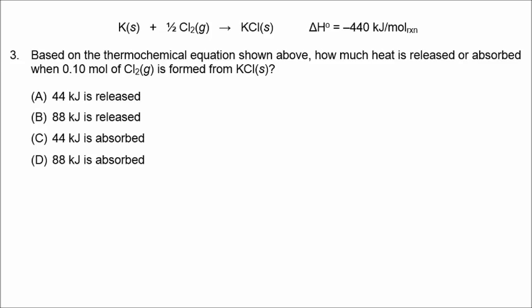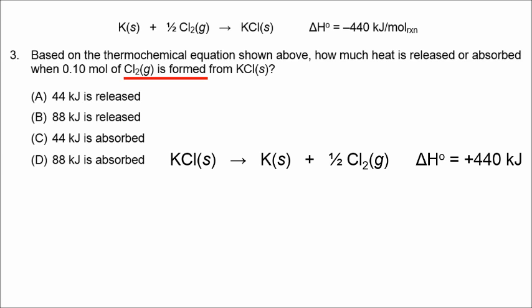In number 3, it's talking about the amount of heat associated with 0.1 mol of chlorine gas being produced. It says chlorine is formed from KCl, which means the reaction shown needs to be reversed for chlorine to be produced. When we flip a chemical equation around, we change the sign of delta H.